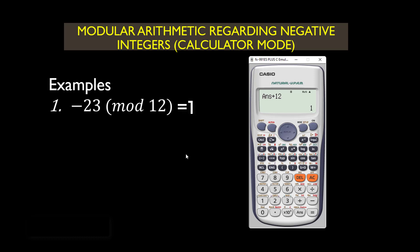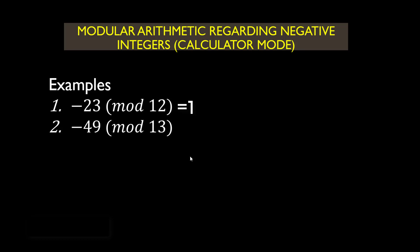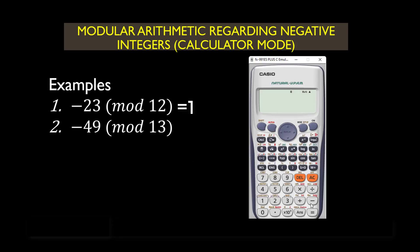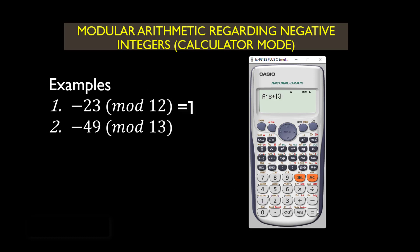Next: negative 49 mod 18. Press AC to clear and type negative 49, press the equal sign, then AC. Press answer plus the modulus, which is 13. Keep pressing the equal sign: negative 36, then negative 23, then negative 10, then positive 3. So negative 49 mod 18 is simply equal to 3.